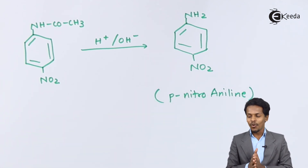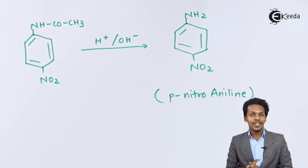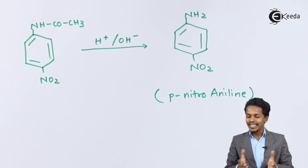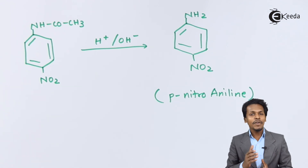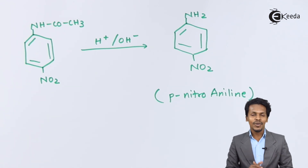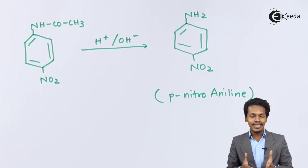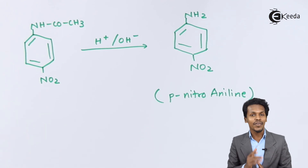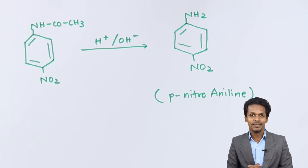This is how we can obtain para-nitroaniline. Thank you, friends, for watching this video. I hope you have understood this reaction very easily, and I hope to see you next time. Till then, don't forget to subscribe to our channel. Thank you so much.